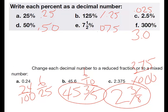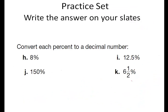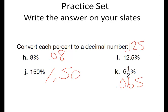See if you can do H, I, J, and K on your own. See if you can get it before I do. I'll show you the answers here in a minute. Stop the video if you need more time. Convert each percent to a decimal. 8% is going to be 0.08. 12.5% is going to be 0.125. 150% is going to be 1.50. And 6.5% is going to be 0.065. There you go.